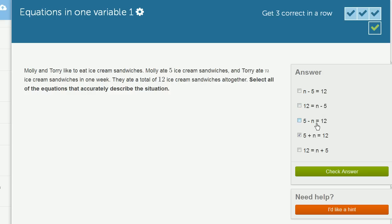5 minus N is equal to 12. Well, that's just the difference between Molly and Tori. And that's definitely not going to be equal to 12. Well, the sum of the two is going to be equal to 12.